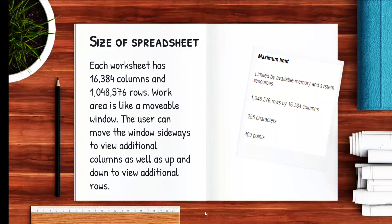The picture appearing on the right side shows some specifications. The first line consists of the specification of rows and columns. The second thing is that 255 characters can be put in one cell, and we have 409 points where we can enter data in various ways.